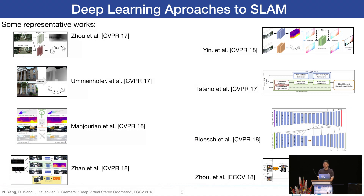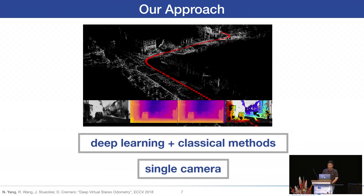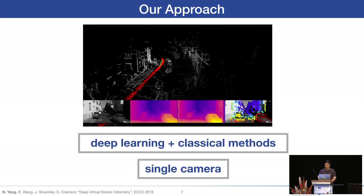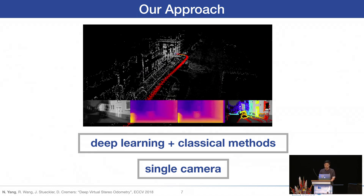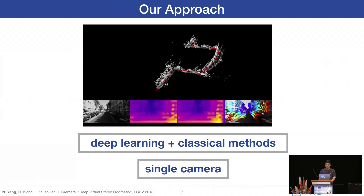Over the last two years, researchers have proposed a number of quite impressive deep learning approaches to visual SLAM or visual odometry. Most of these approaches tackle the problem with end-to-end trained deep neural networks. However, none of these methods can outperform classical approaches in terms of quantitative evaluation on established visual odometry benchmarks such as KITTI or TUM dataset. In contrast, in this work, we propose a hybrid method which combines the advantages of deep learning and classical visual SLAM methods, providing state-of-the-art performance on an established benchmark.